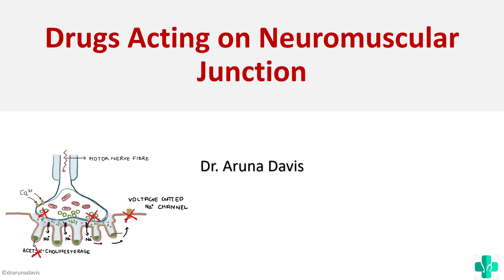In this video we are going to see about the drugs acting on the neuromuscular junction. This question is usually asked as a sub-question of an essay question — for example, if myasthenia gravis is the essay question, one of the sub-questions would be the drugs acting on the neuromuscular junction. This can also be asked as a short essay. So let's see about this from a physiology point of view.